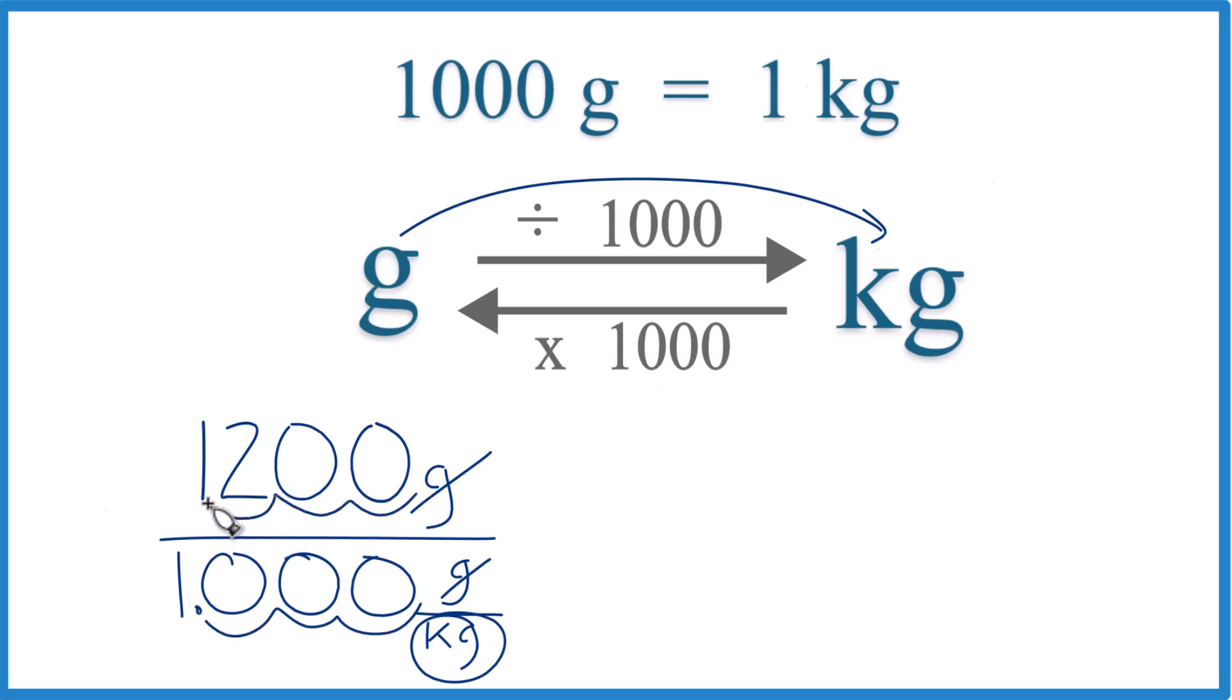And up here, 1, 2, 3. And we end up with 1,200 grams equals 1.2 kilograms. We can ignore these zeros here.